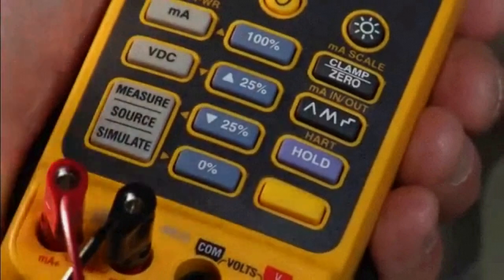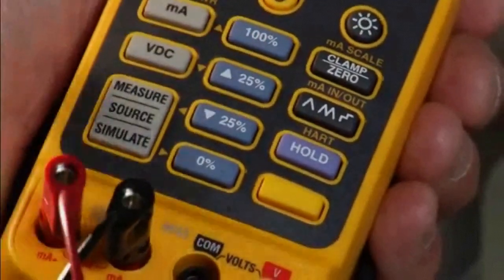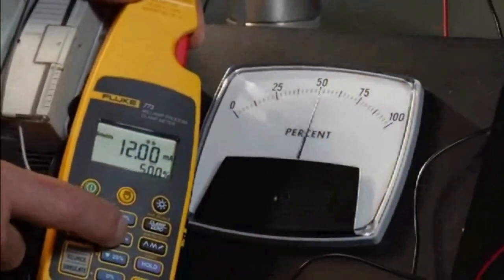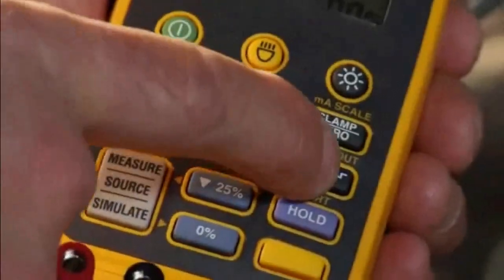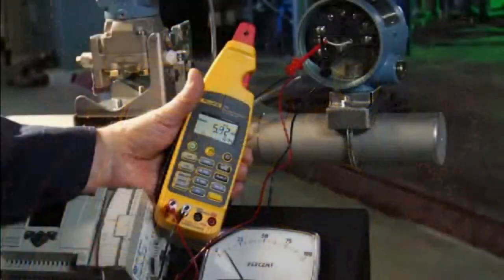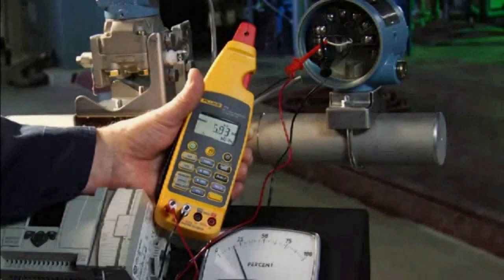In simulate mode, you can exercise and check the local indicator at 25% steps. You can also utilize the ramp feature and test it automatically by ramping the milliamp signal and watching it change.